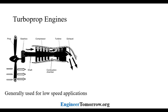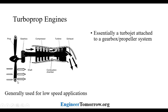Next we have the turboprop engine. These are used for low speed applications, still lower than the turbofan applications. There is the turbine, the compressor, the combustor, the turbine and the nozzle — whichever geometry that may be. There is also a reduction gearbox, and the purpose of this gearbox is to reduce the speed of rotation of the giant propeller. Essentially, it's a turbojet attached to a gearbox and propeller system.